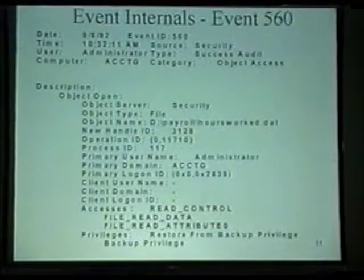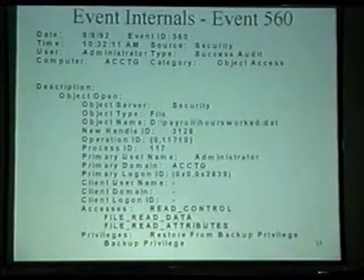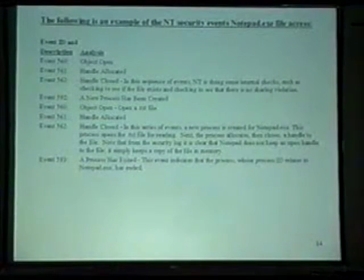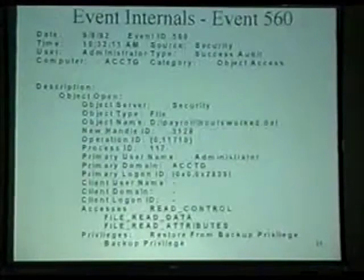In the Event Viewer tool, if you double-click on one of those events you're going to see more information on the event. This is a sample of what you'd see for an event 560. If you've got a busy server, chances are these events won't be directly in order after another - you'd have to hunt and find them. You can look at the handle ID numbers and match up which process actually did it.